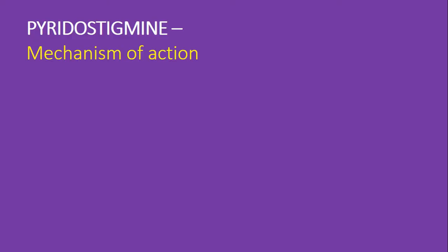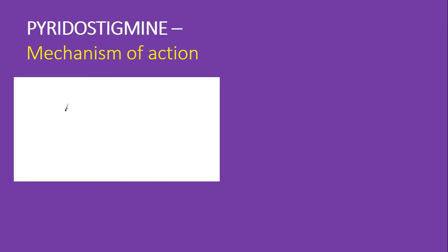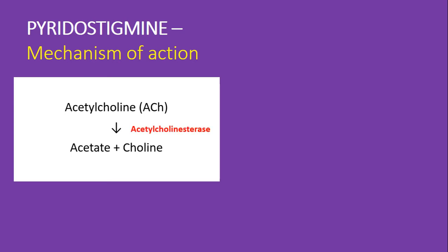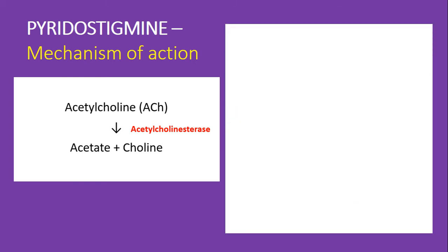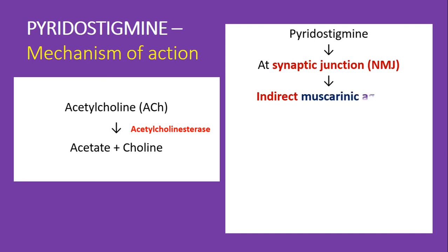The mechanism of action of pyridostigmine is similar to that of neostigmine. As basic understanding, the neurotransmitter acetylcholine is converted into acetate and choline at the synaptic junction with the help of acetylcholinesterase, thereby reducing acetylcholine levels. Pyridostigmine is an indirectly acting muscarinic agonist which acts at the neuromuscular junction.